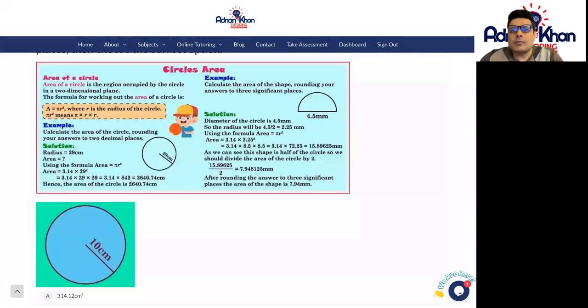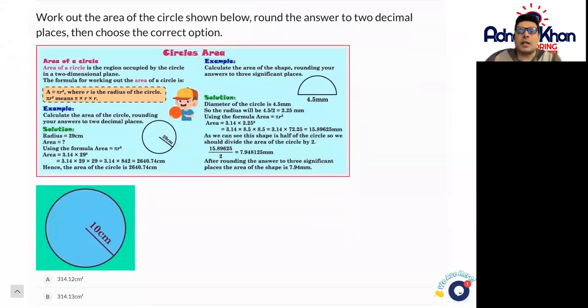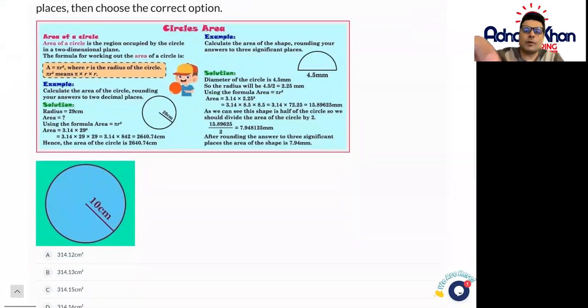Hello there and welcome to area of circles. Let's show you the formula to work out the area of a circle, which is fairly straightforward. It's π r², which also means π times r times r.